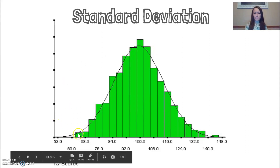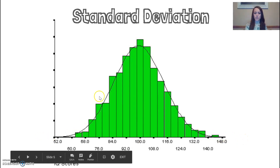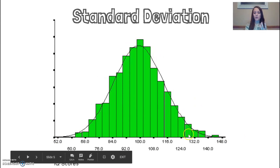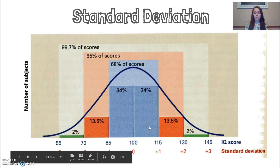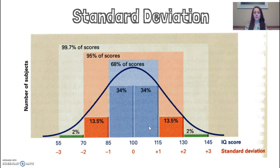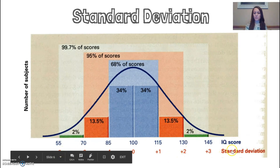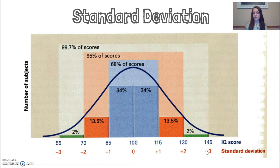If we were to plot IQ, we'd have bar graphs with fewer people scoring low scores — 52, 68, 84 — and it starts getting higher and higher until we get to 100, where we have a lot of people. That's our mean, median, and mode. Then it drops off as we get into extremely high IQs — that's the bell-shaped curve. Standard deviation is just a measurement tool to tell us how far away something is from the mean. If a standard deviation of three, it's very far away; if it's one, it's not too far from the average.